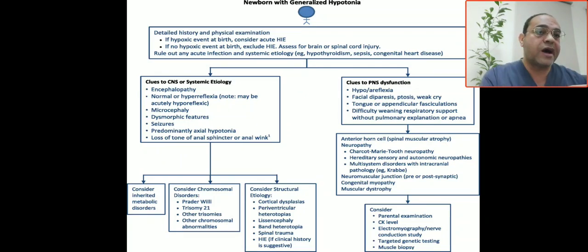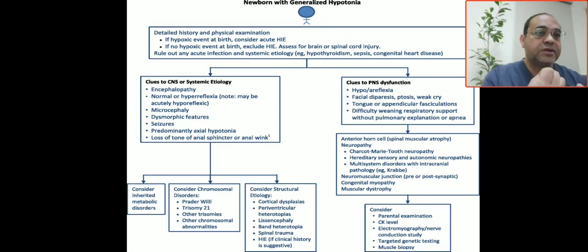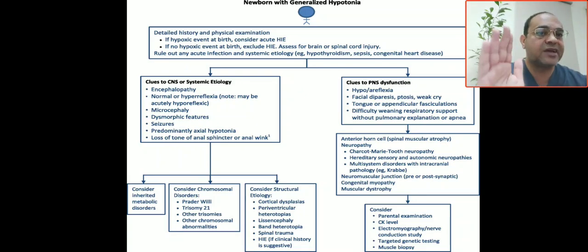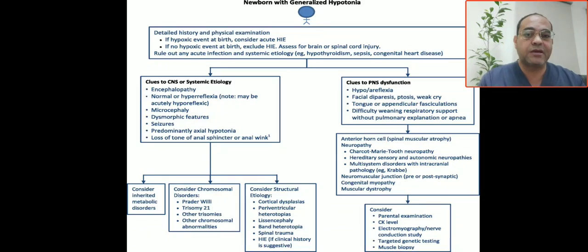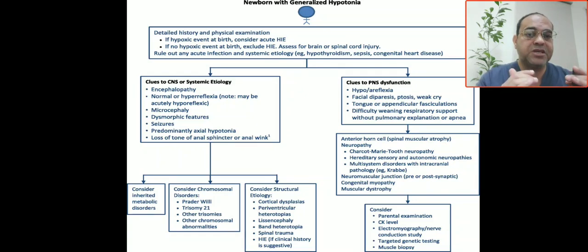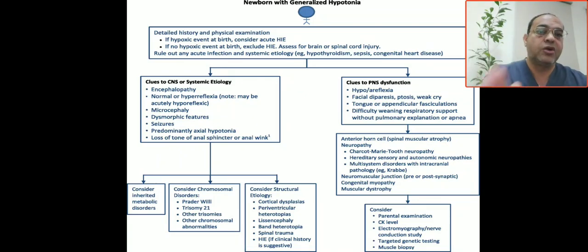Lower motor neuron triad: hypotonia, hyporeflexia, and fasciculation. For upper motor neuron lesions, consider inherited metabolic disorders and chromosomal causes such as Down syndrome and other trisomies. Structural etiologies may include brain hemorrhage, hypoxia, trauma, hypoxic-ischemic encephalopathy, and cortical degeneration.